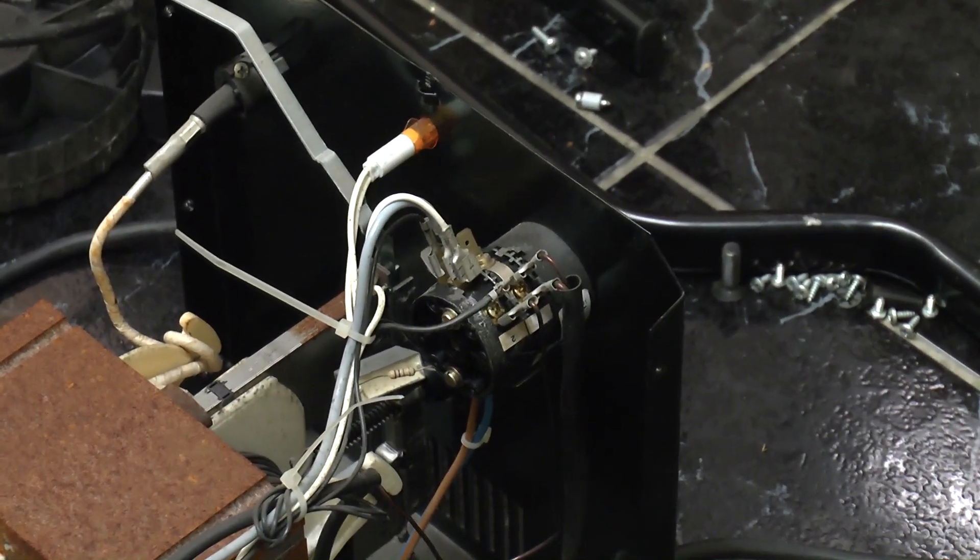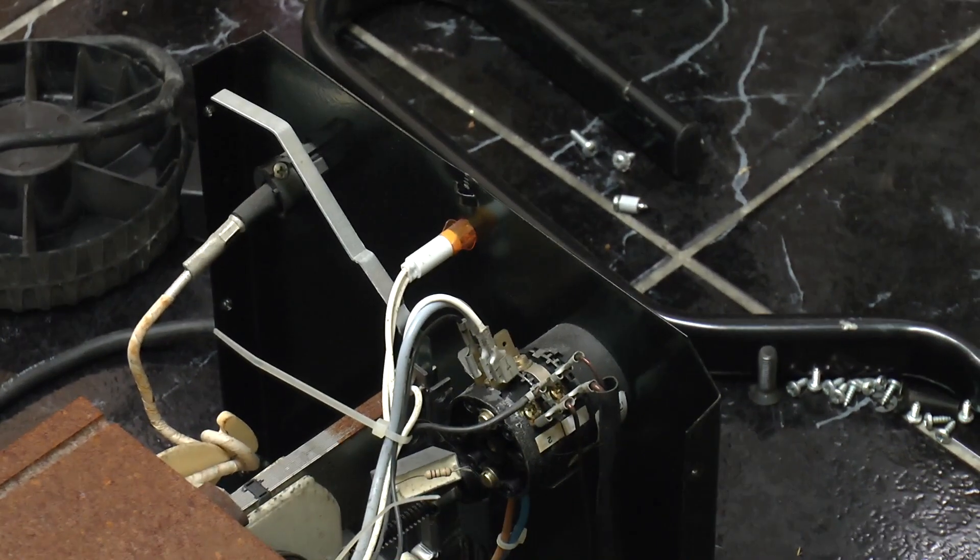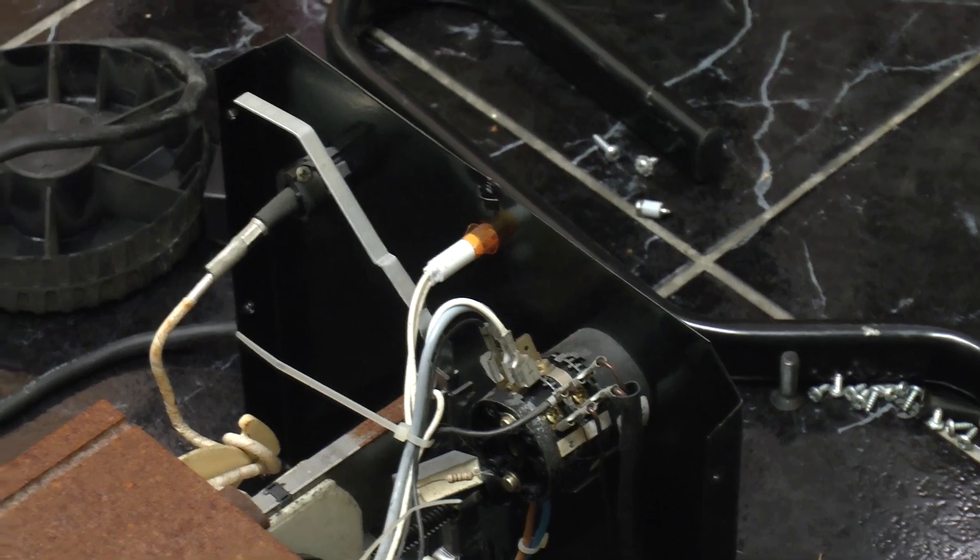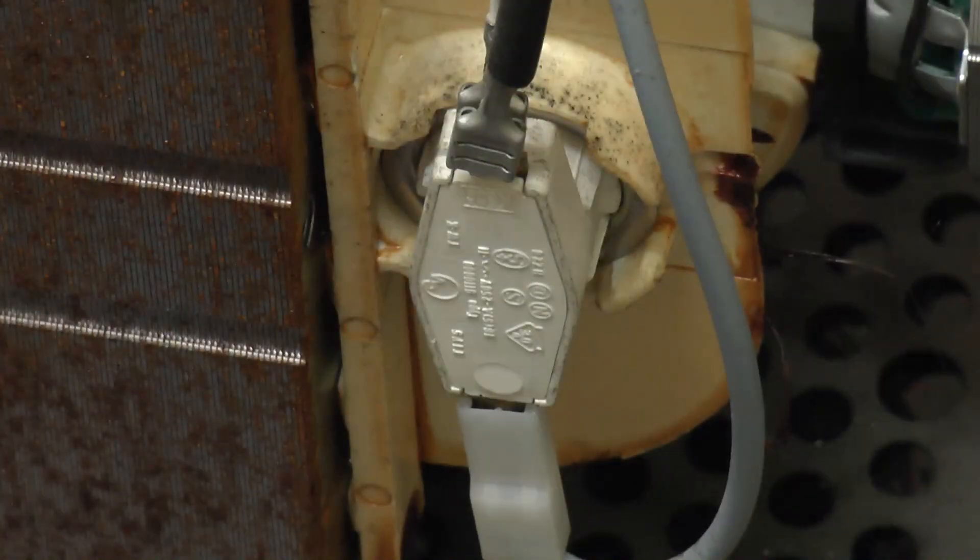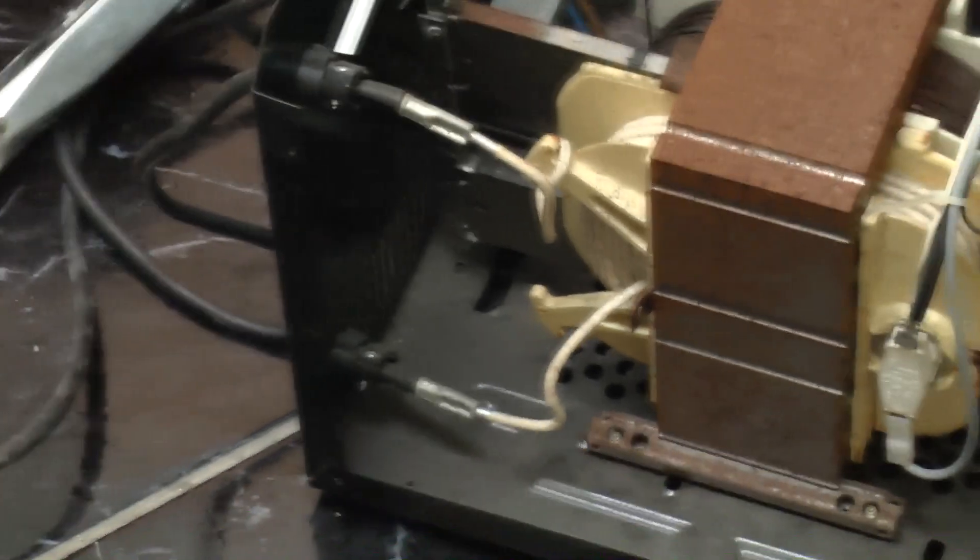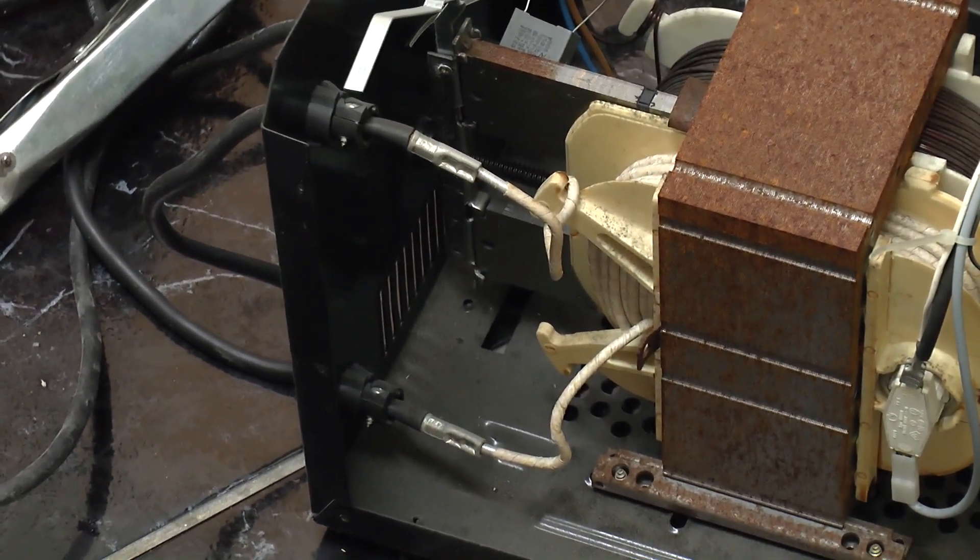There's the 240 and 400 volt selector switch. That's the back of the thermal cutout trip indicator. On the back of the transformer we have the thermal cutout, and then finally we have the welding output cables.